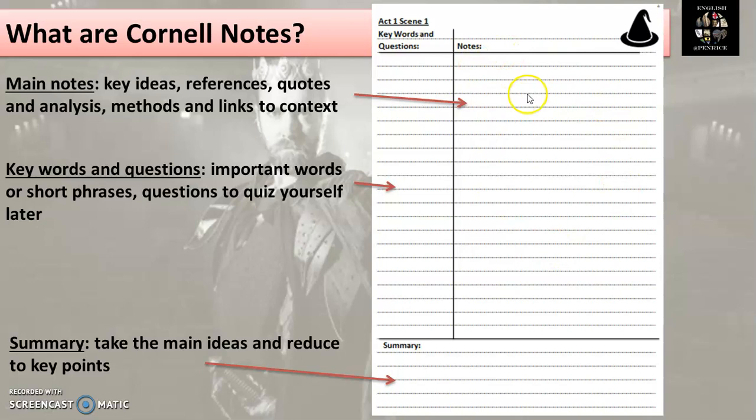What goes into each of these boxes then? So in your big notes space we're making space for key ideas from the scene, references, quotes, brief analysis, any methods that Shakespeare's used and any links to context. So as we're reading or as we're looking at a video about the scene or as we're looking through our revision guide or notes on the scene, we're going to be compiling our main notes here.